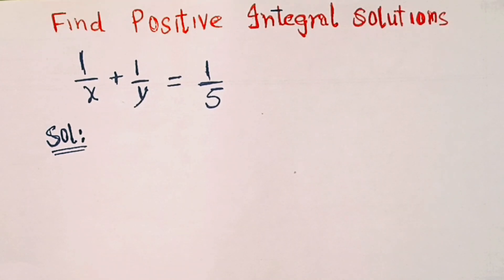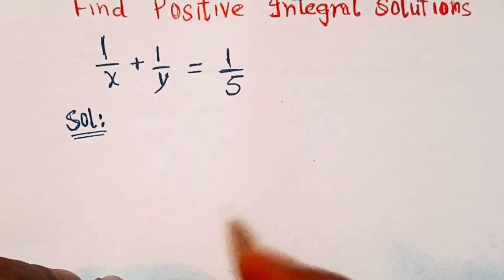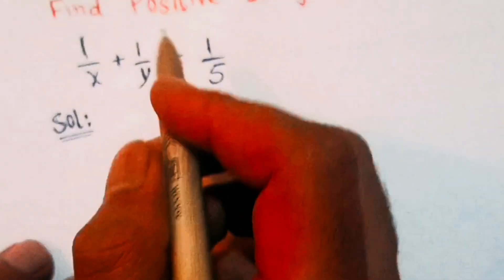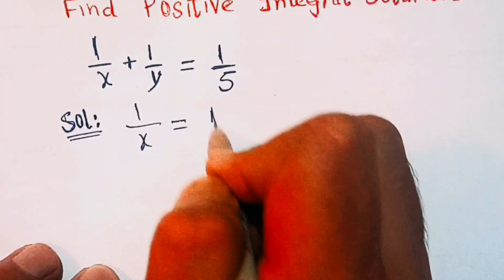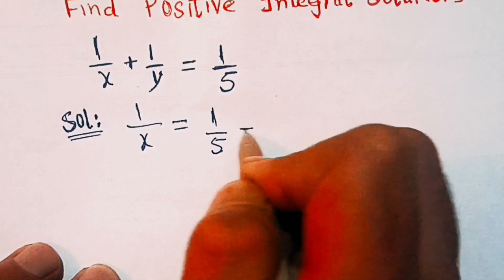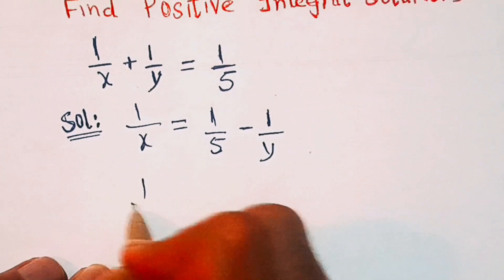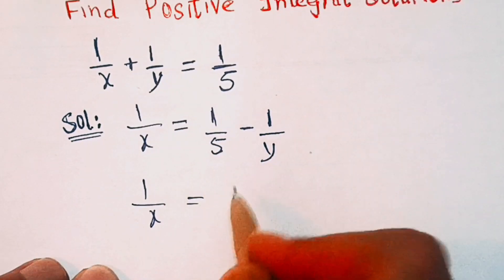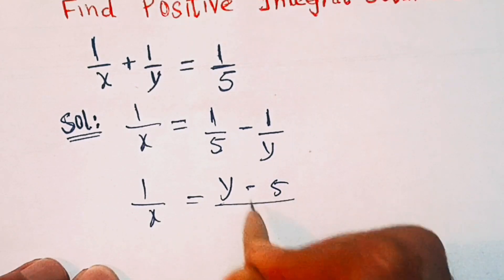Hello everyone, welcome back to Think and Derive. We have 1/x + 1/y = 1/5. We will find the positive integral solutions. In the first step, we will subtract 1/y on both sides, so that gives us 1/x = 1/5 minus 1/y, which is y minus 5 over 5y.